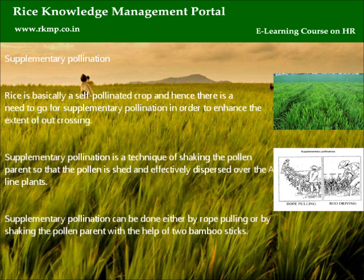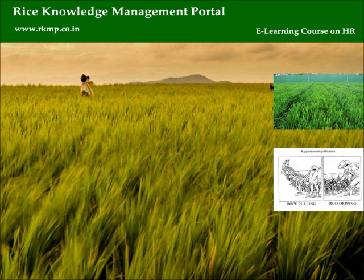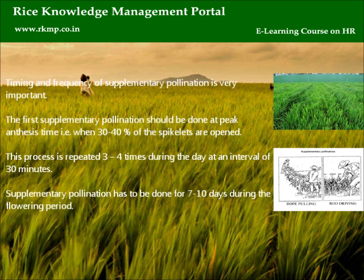Supplementary pollination: rice is basically a self-pollinated crop, and hence there is a need for supplementary pollination to enhance the extent of outcrossing. Supplementary pollination is a technique of shaking the pollen parent so that pollen is shed and effectively dispersed over the A-line plants. It can be done either by rope pulling or by shaking the pollen parent with the help of two bamboo sticks. The first supplementary pollination should be done at peak anthesis time — that is, when 30–40% of the spikelets are opened. This process is repeated 3–4 times during the day at an interval of 30 minutes, and supplementary pollination has to be done for 7–10 days during the flowering period.